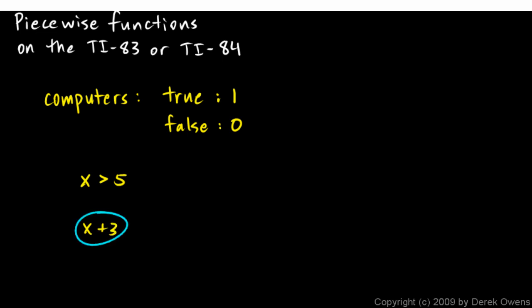the computer would interpret this as a number, whatever number x is, plus 3. So this expression evaluates to a number. Well, this expression evaluates to a number also. And it evaluates to the number 1 if the expression is true and the number 0 if the expression is false.